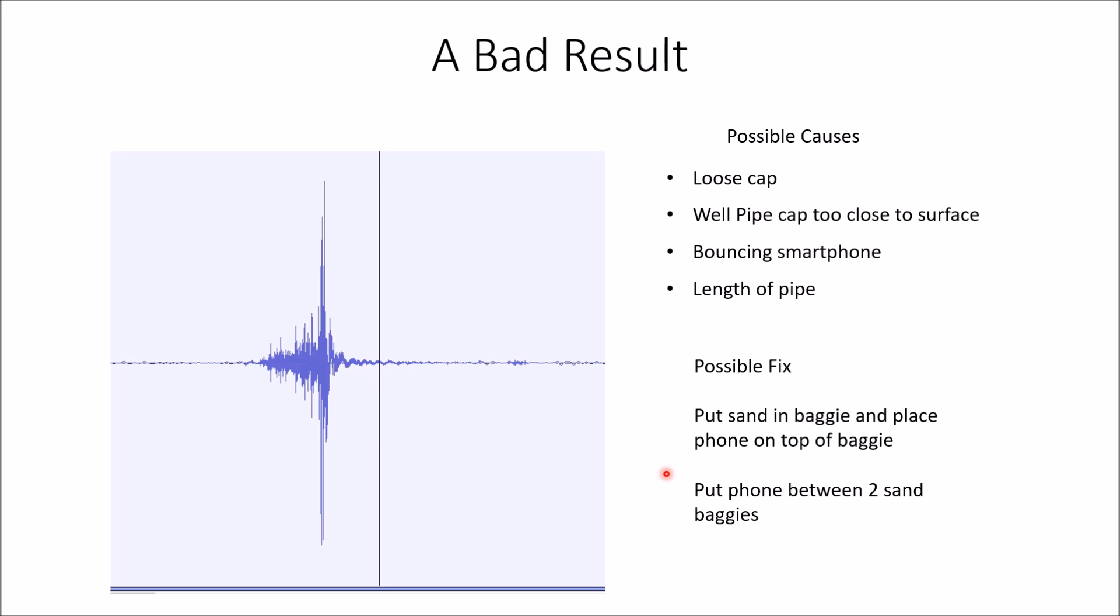So one possible fix that we thought of is to put sand in a baggie and place the phone on top of the baggie. And the next thing you could do is put the phone between two sand baggies and see if that helps dampen this. You want a much cleaner spike here. And the initial pulse should be like 35 to 40 milliseconds in duration. Other than that, you're going to get your echoes buried.